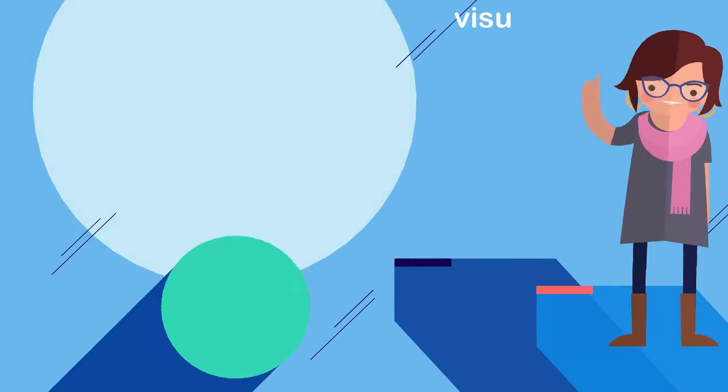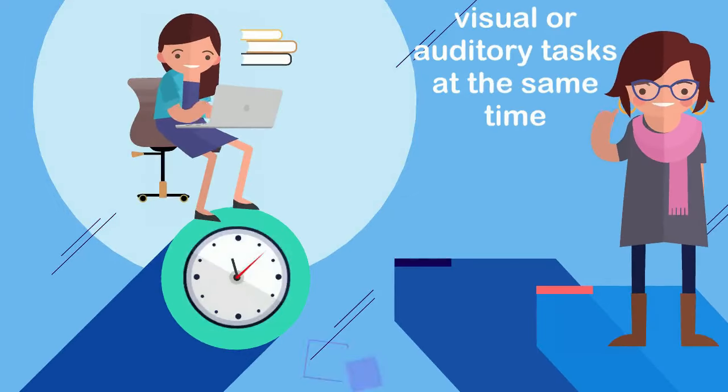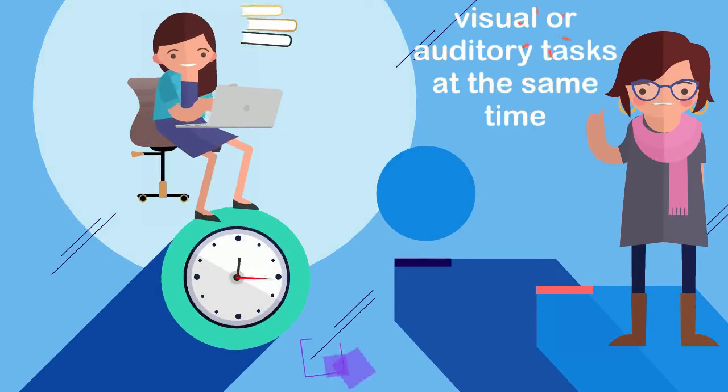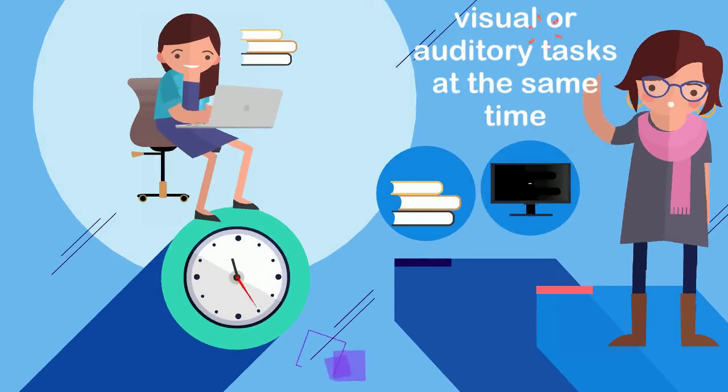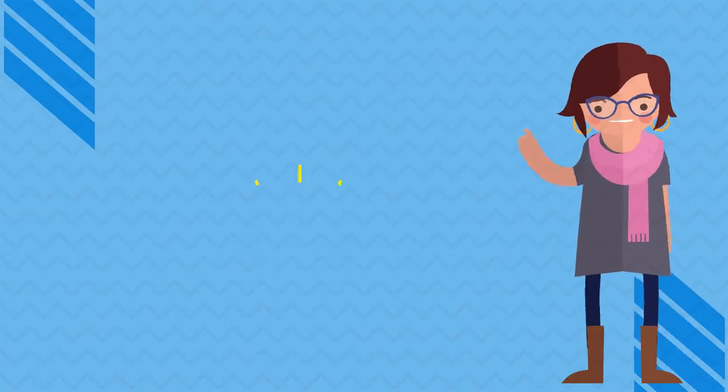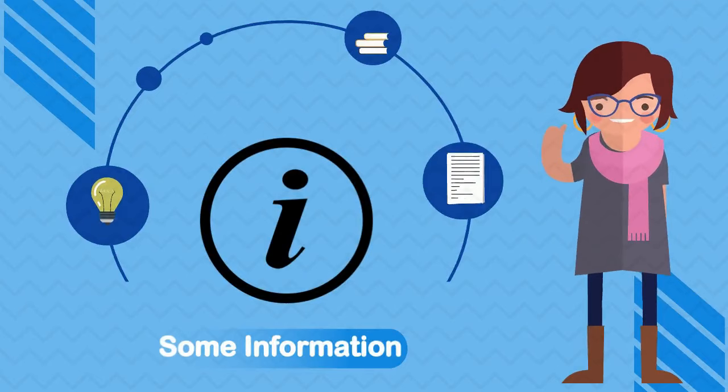However, we cannot do two visual or auditory tasks at the same time, for example, reading two books or watching two TV shows. If we do this, some information may get through, but it will be limited.